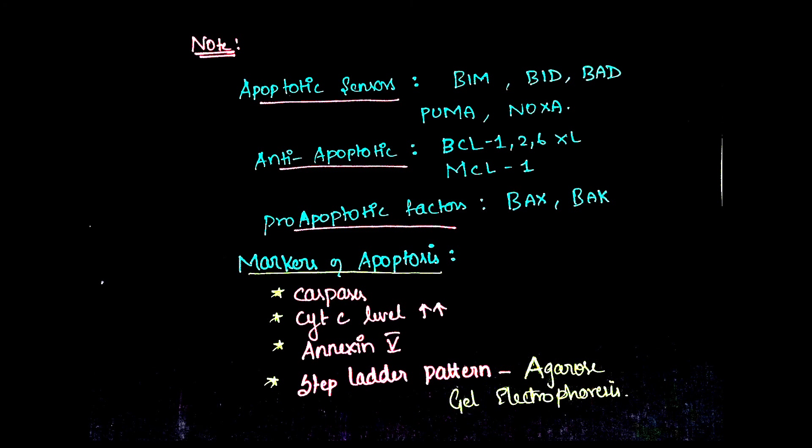The apoptotic sensors are BIM, BID, BAD, PUMA, and NOXA. The anti-apoptotic factors are BCL-2, BCL-XL, and MCL-1. The pro-apoptotic proteins are BAX and BAK. The markers of apoptosis are caspases, elevated cytochrome c levels, presence of Annexin V, and a ladder pattern on agarose gel electrophoresis.